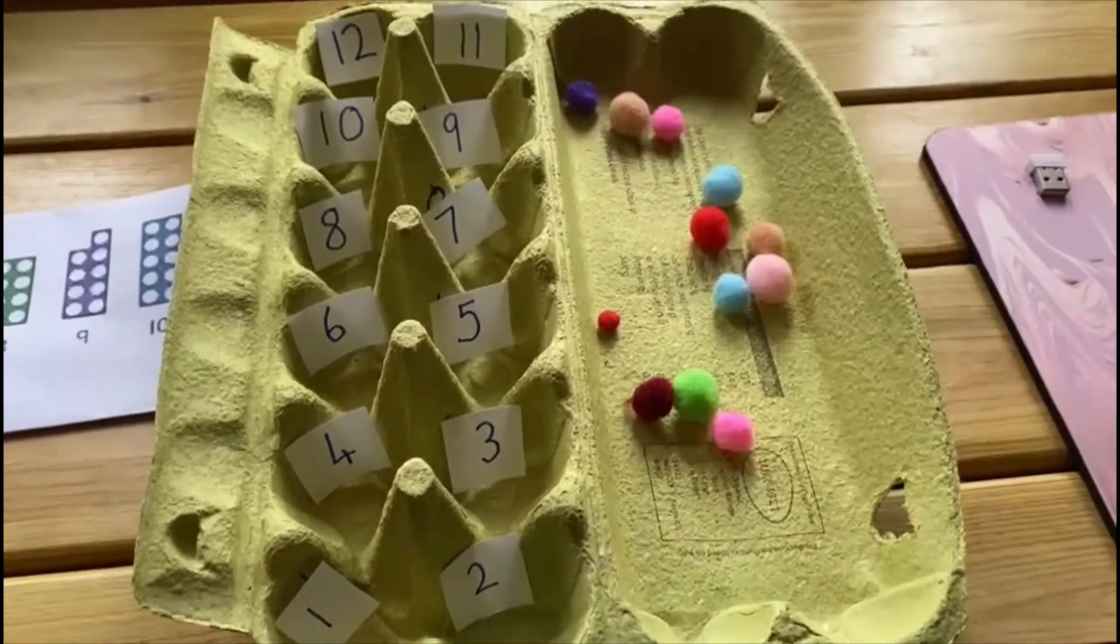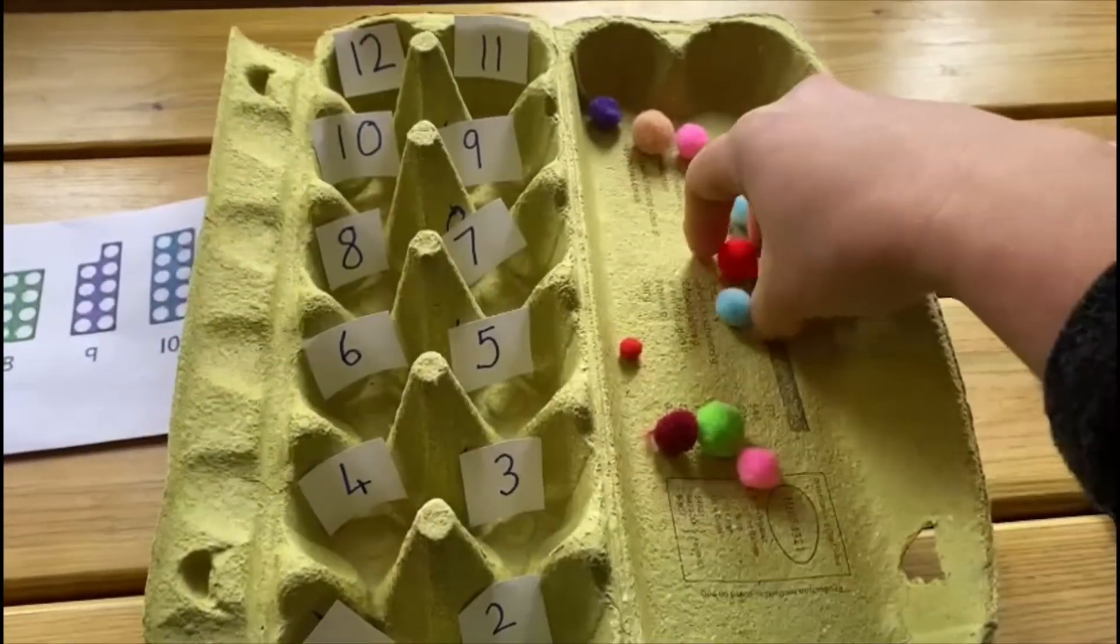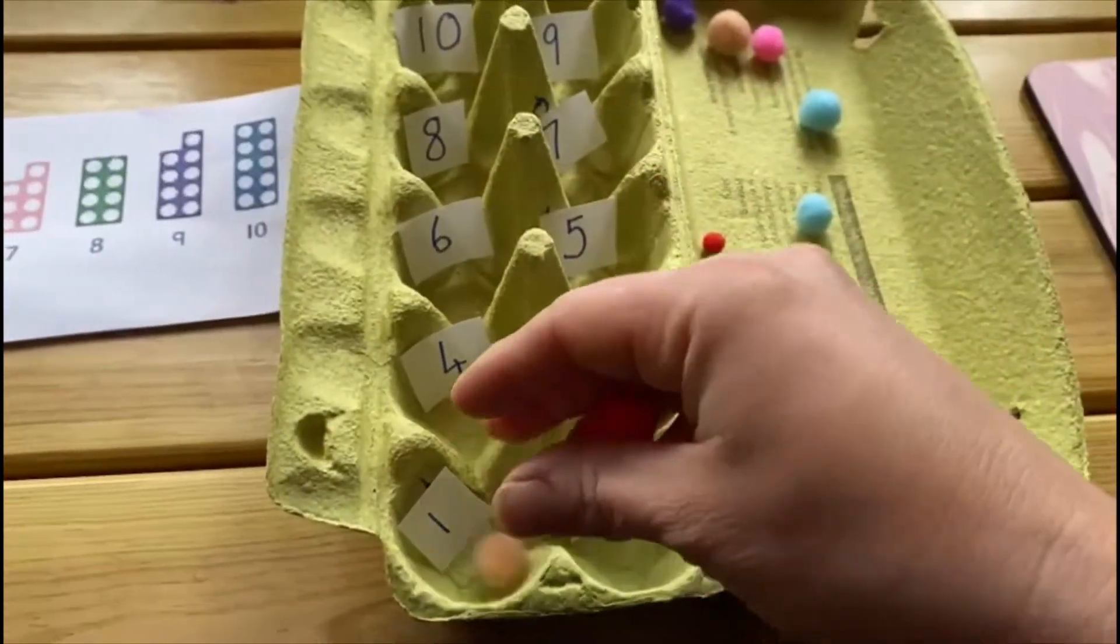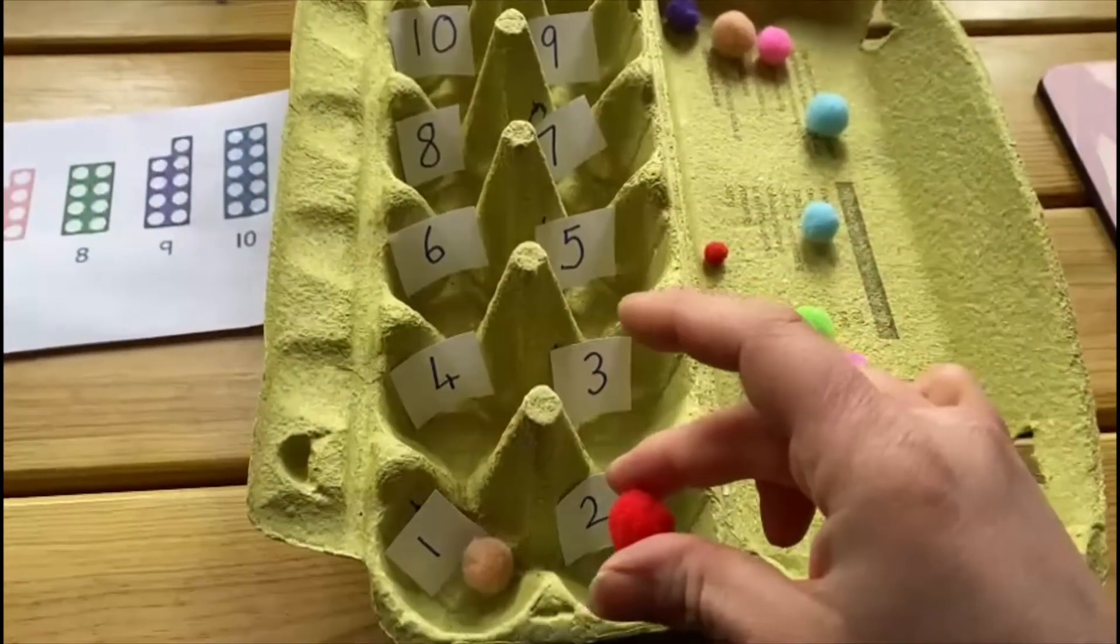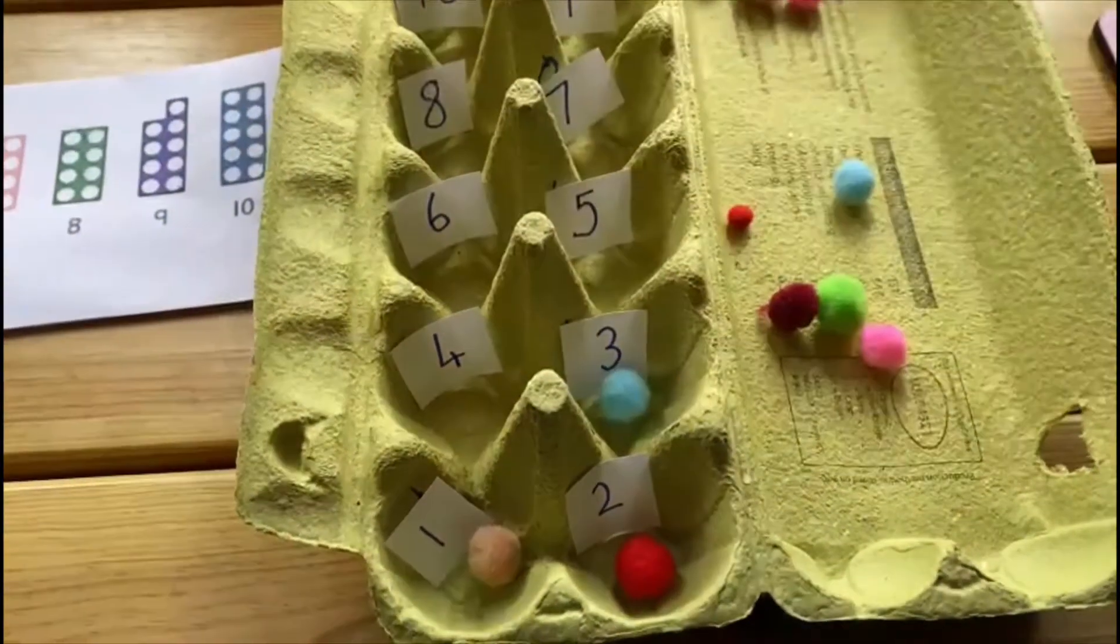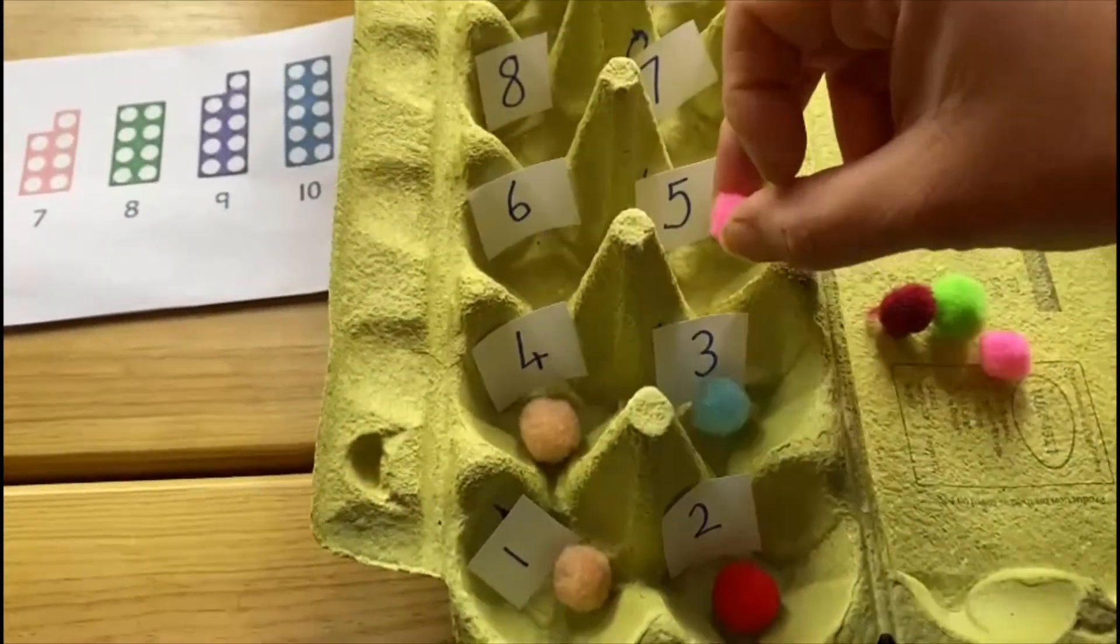Okay, so my first number is going to be number five. So I put one pom pom in one, one in two, one in three, one in four, and one in five.